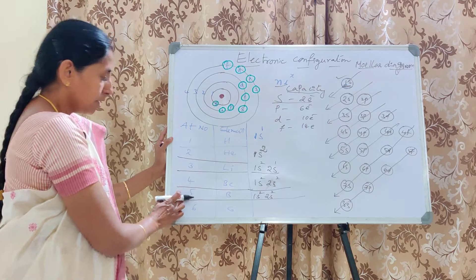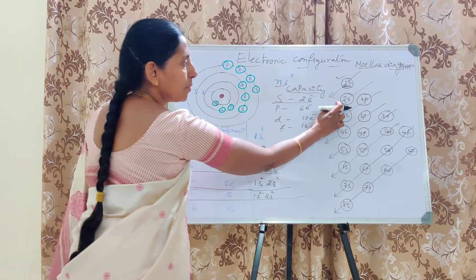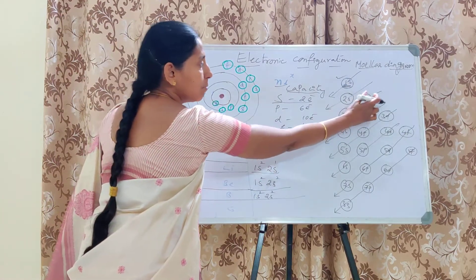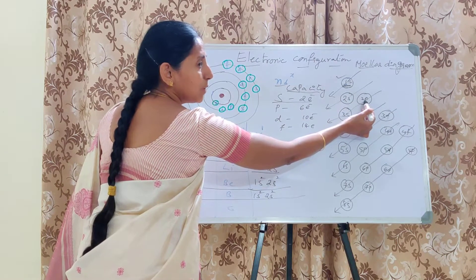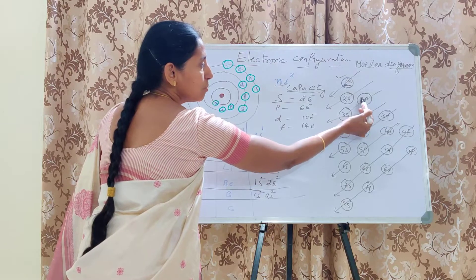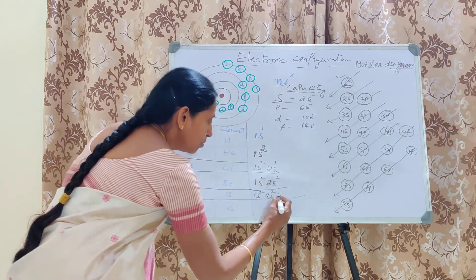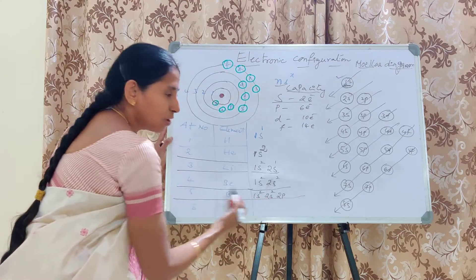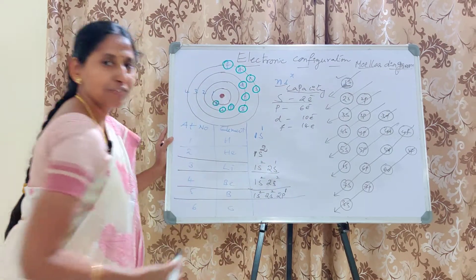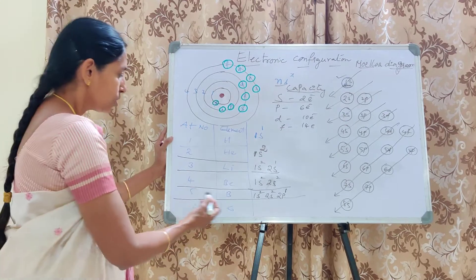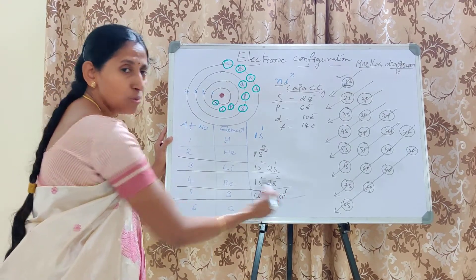Now Boron has 5 electrons. First two electrons go to 1S², then the next two go to 2S², accounting for 4 electrons. After completing 2S, we take the help of the third arrow mark, which shows 2P. The fifth electron goes to 2P, so Boron's configuration is 1S² 2S² 2P¹.